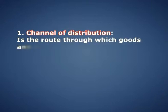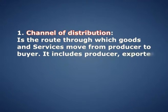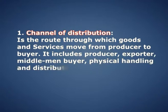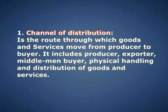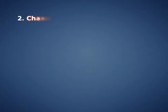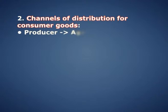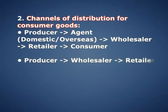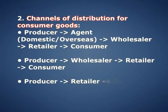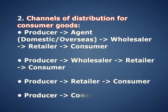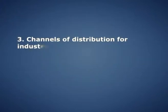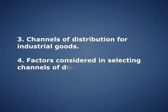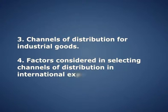Let's cover the main points. First, channel of distribution is the route through which goods and services move from producer to buyer. It includes producer, exporter, middleman, buyer, physical handling and distribution of goods and services. Second, channel of distribution for consumer goods: from producer to agent, agent to wholesaler, wholesaler to retailer, and retailer to consumer; or producer to wholesaler to retailer to consumer; or producer to retailer to consumer; or directly from producer to consumer. Third, channel of distribution for industrial goods. Fourth, factors considered in selecting channels of distribution in international export.